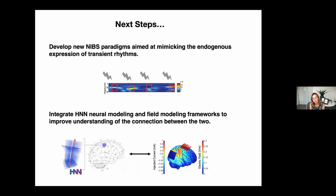Given this, we're redesigning our brain stimulation experiments to more accurately account for these transient brain rhythms rather than trying to entrain continuous oscillations. We're now using TMS in the lab to develop paradigms that more naturally mimic the probabilistic expression of these beta events. We're also working to integrate HNN with field modeling frameworks — such as SimNIBS and NEMO TMS — to simulate field activity and connect it to neural circuits, which is all work in progress.